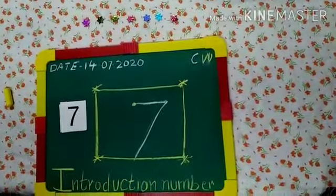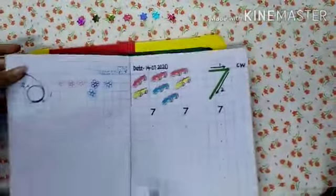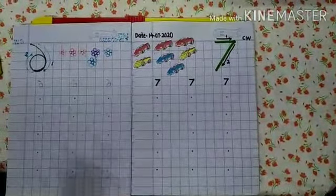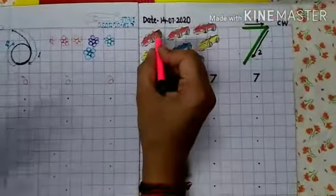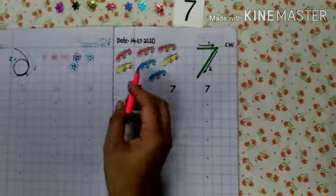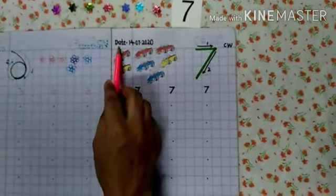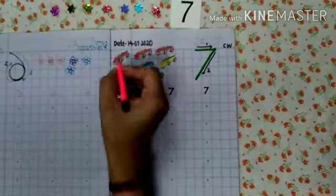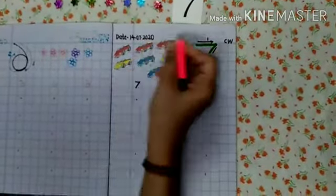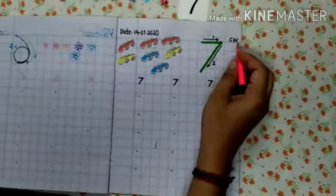Take out your maths notebook. On the left hand side, write down the date. So, let's start. Take out your notebook. On the left hand side, write down the date. 14.07.2020. On the right hand side, write down C.W.